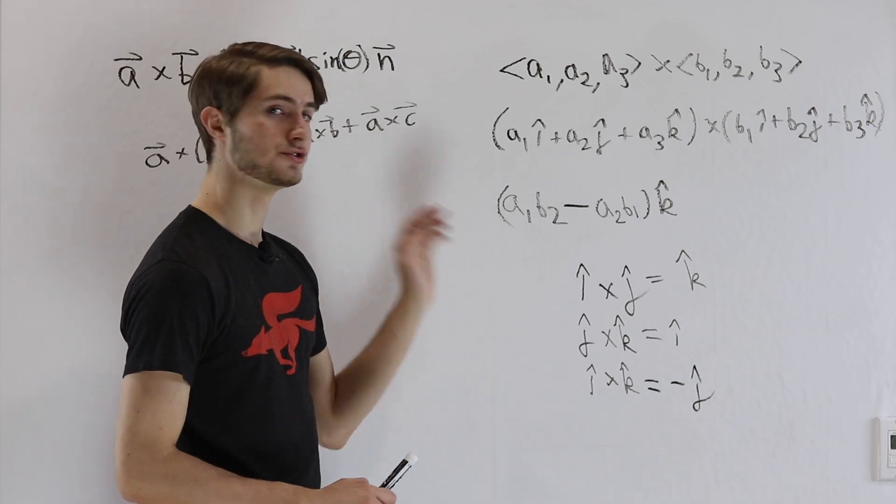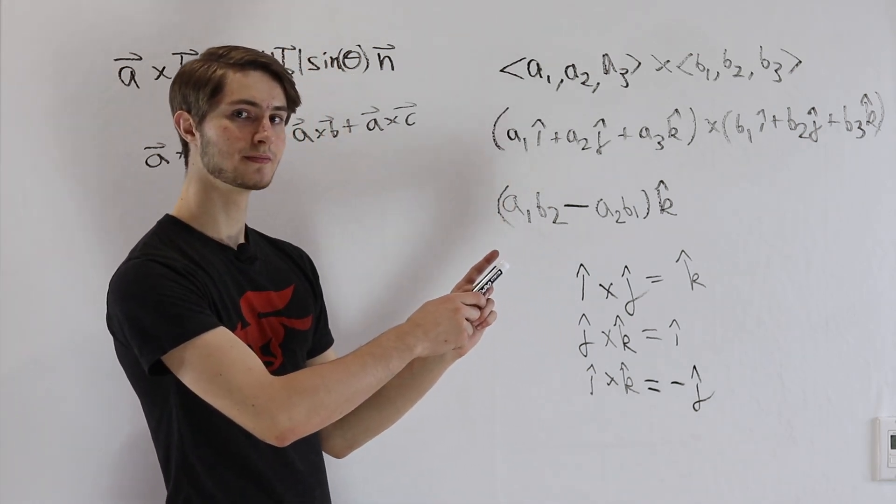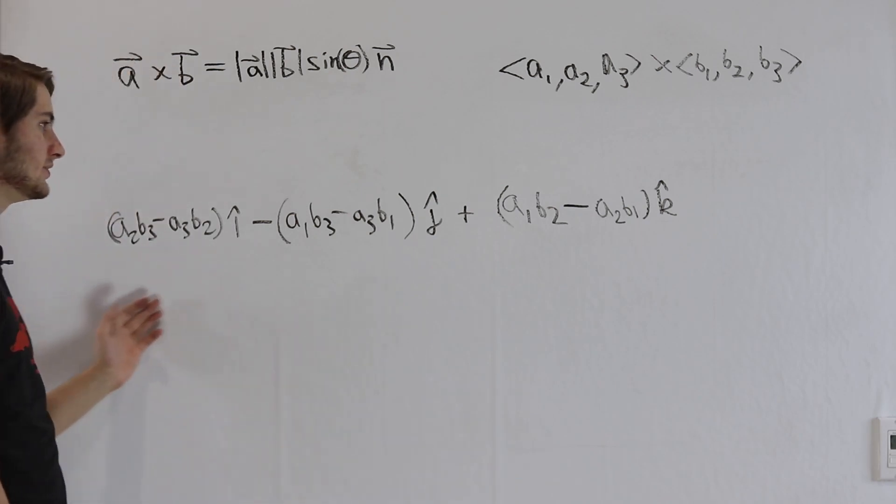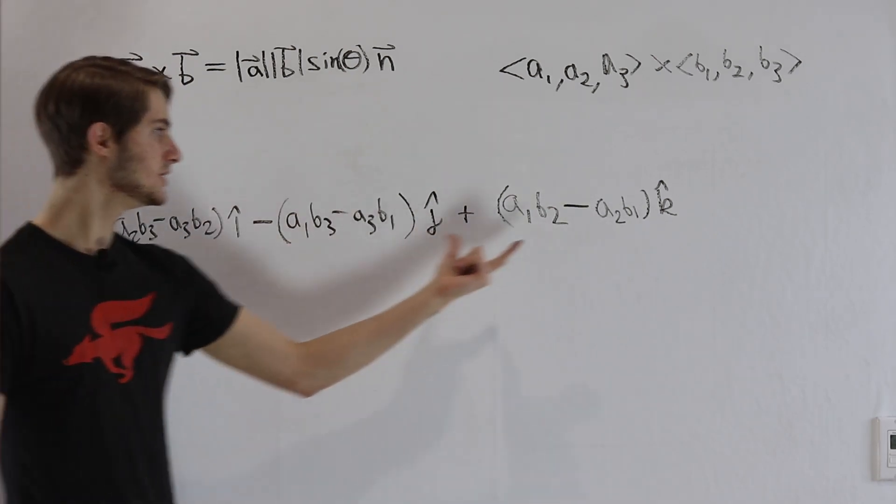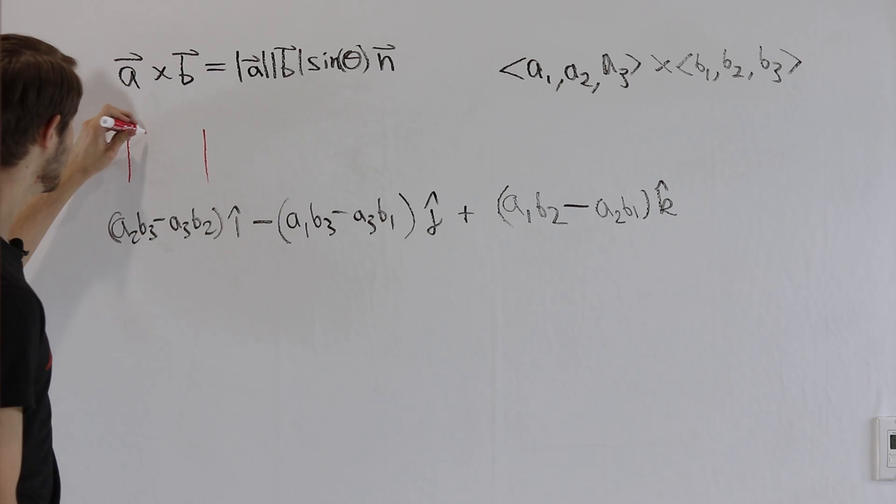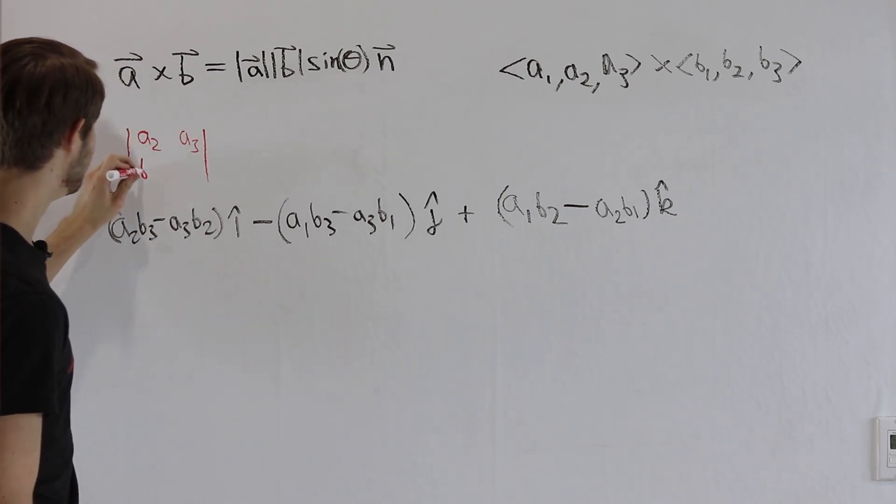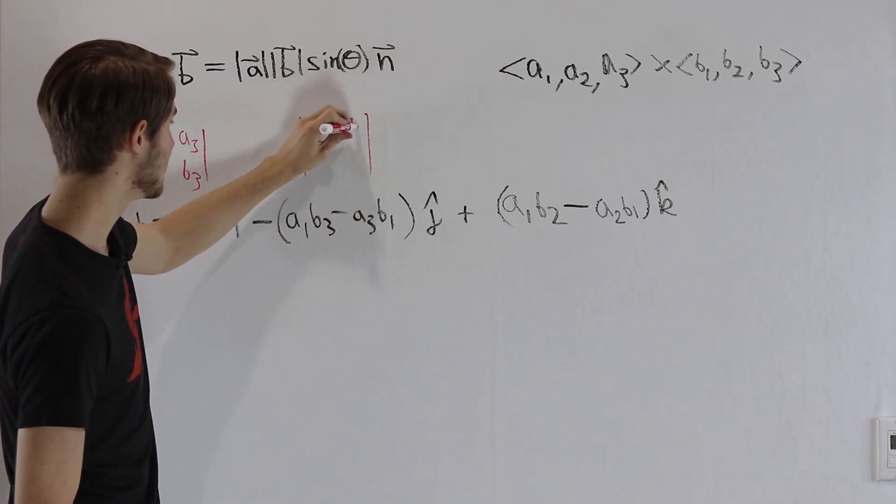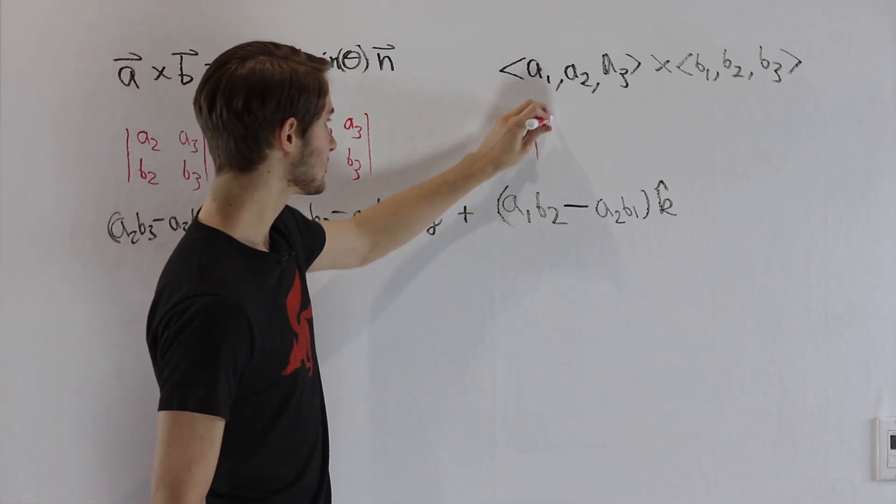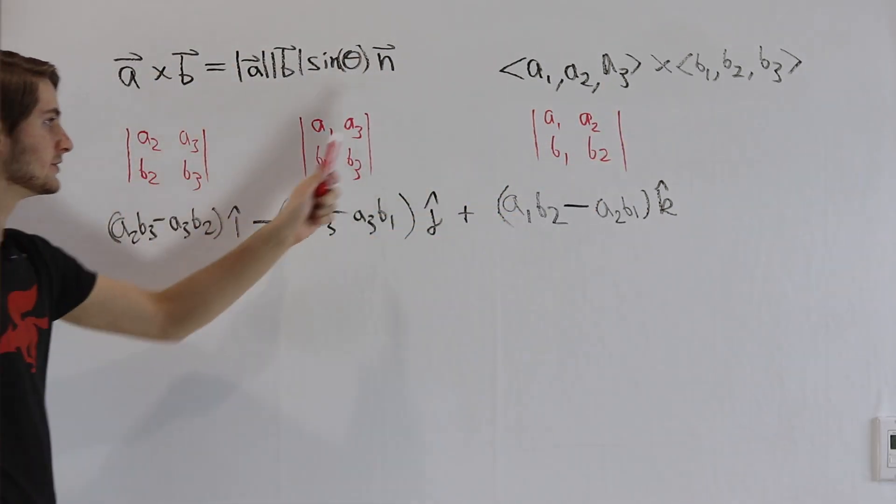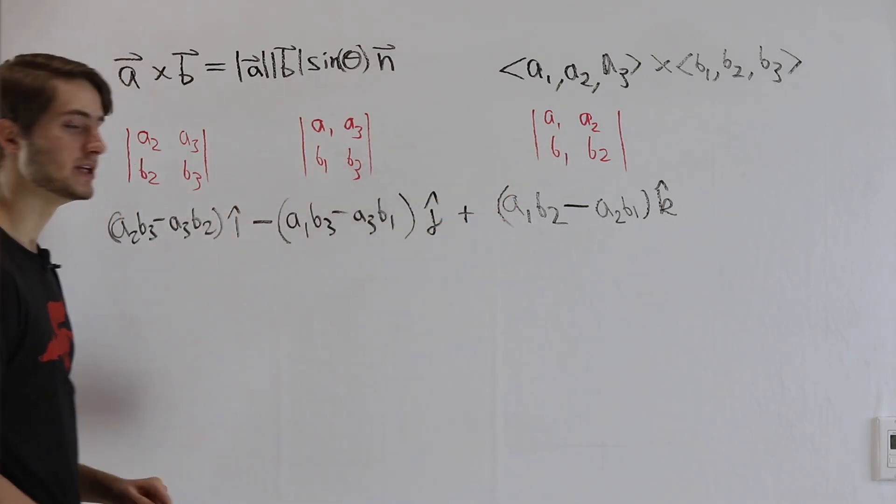So once you expand out the algebra for this cross product in terms of i hat, j hat, and k hat, this is the entire result that you get. Now let's take a look at each of these coefficients here of our unit vectors. a2 b3 minus a3 b2 can actually be written as the determinant of a matrix if we have (a2, a3) and then (b2, b3) as our two rows. We can do the same thing for the other parts here if we have (a1, a3), (b1, b3) and then for the last one (a1, a2), (b1, b2). So we have the determinants of three different two by two matrices as the coefficients of each of our vectors.